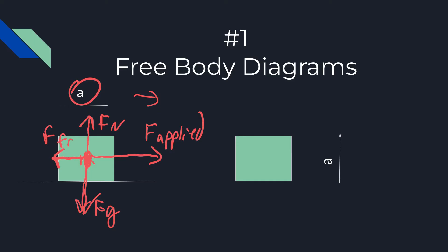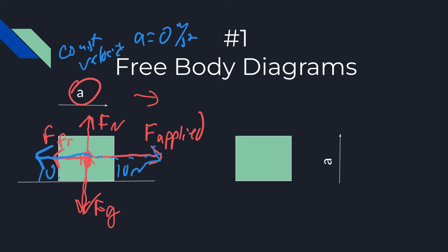Let's do a quick example: what if it says constant velocity? If it says constant velocity, that means acceleration is zero. And if the acceleration is zero, we would draw friction and the applied force to be the same — maybe this is 10 newtons, maybe this is 10 newtons.